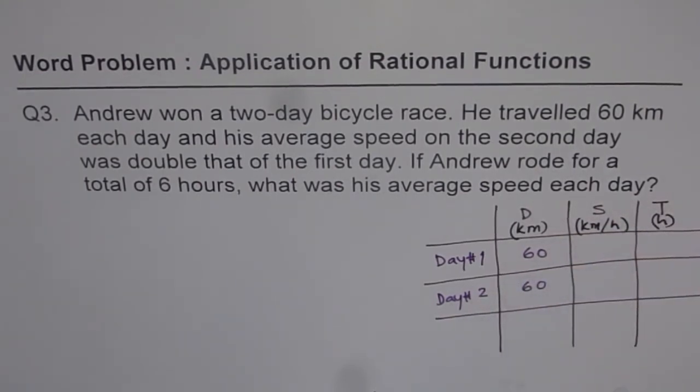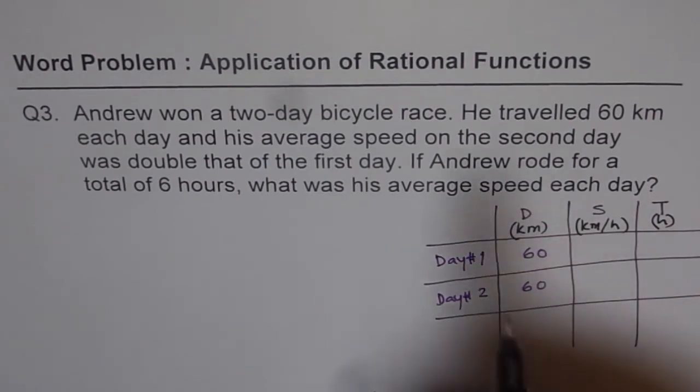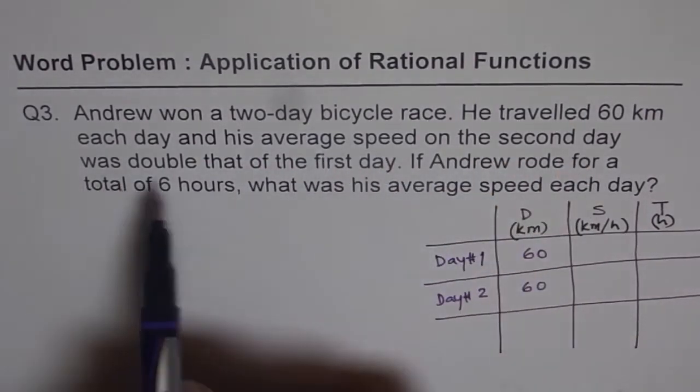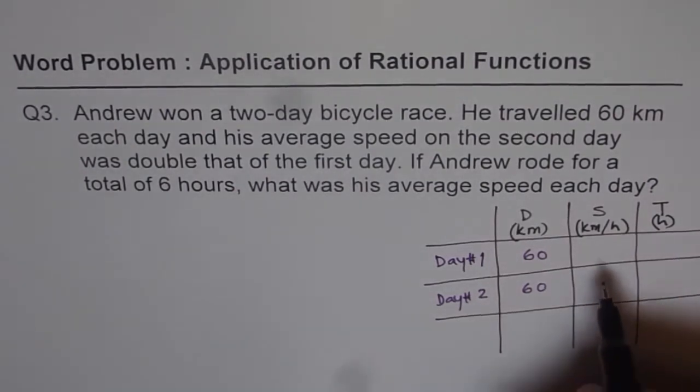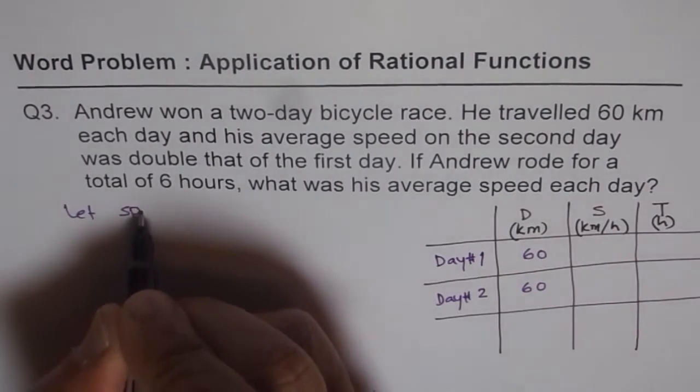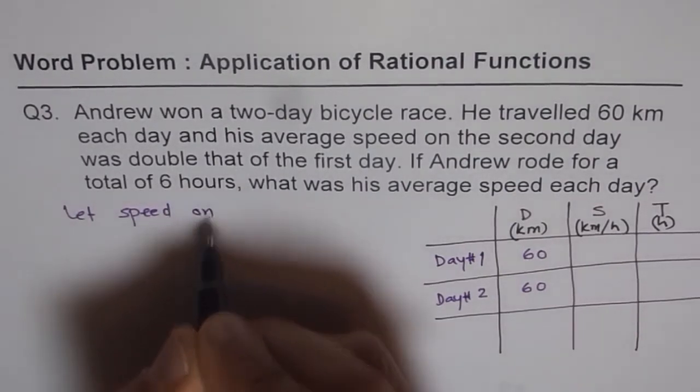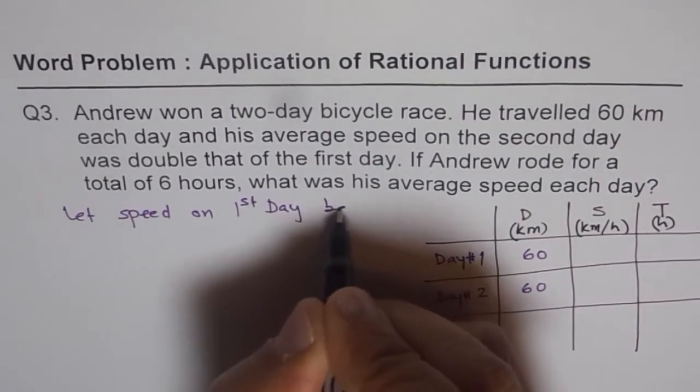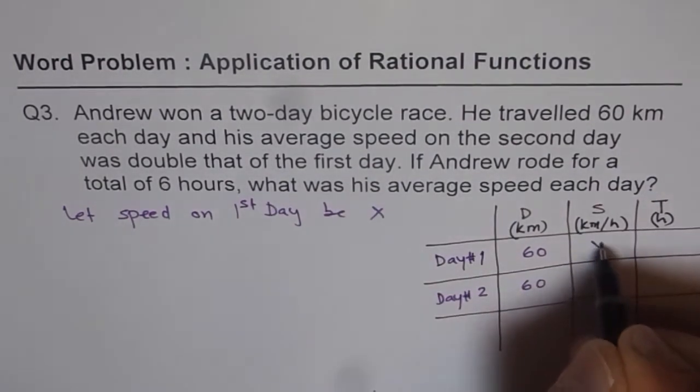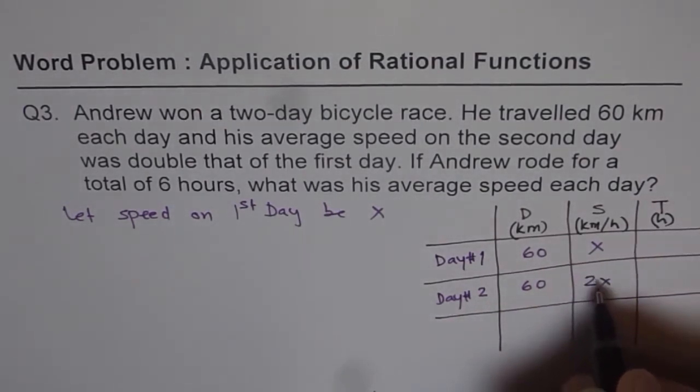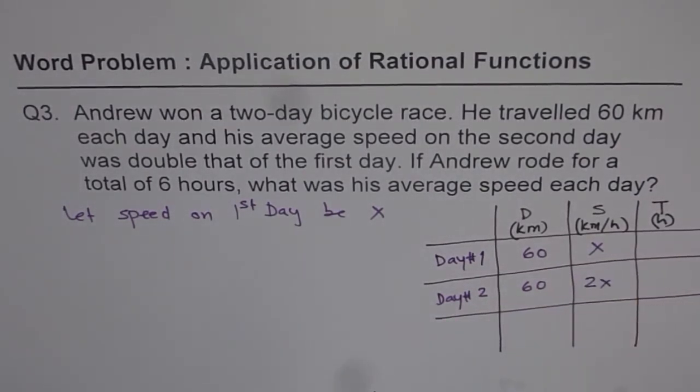Now let's read further and write down about the speed. It says his average speed on the second day was double that of the first day. So we will write down a let statement and say let speed on first day, day 1, be x. The second day is double, so it is 2 times x. So we get our second equation.